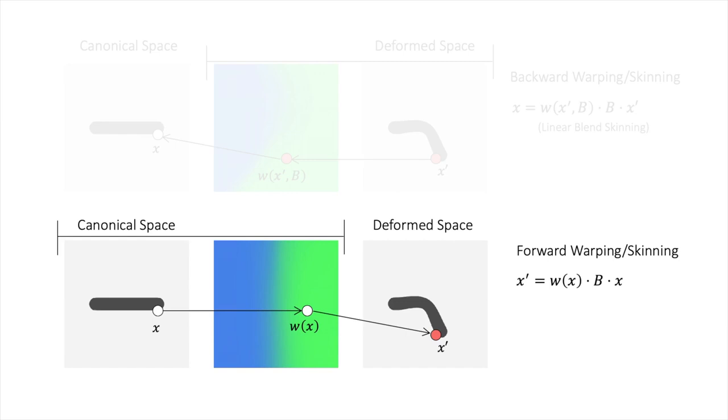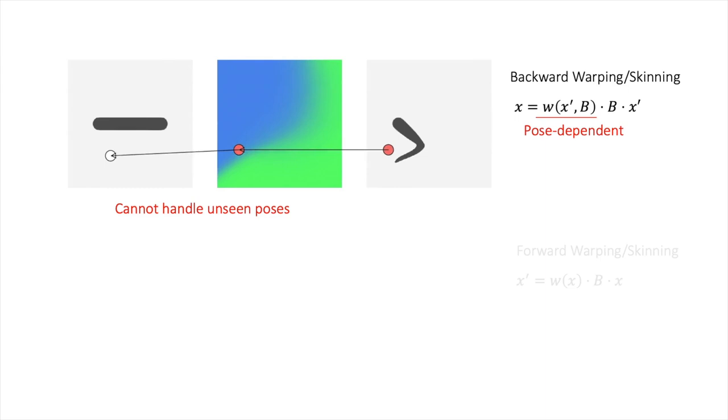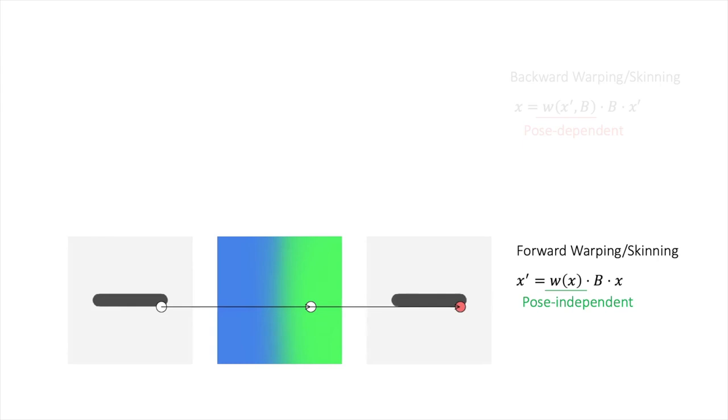As illustrated here, backward skinning weights are pose dependent and do not generalize well to novel poses. In contrast, forward skinning weights do not depend on object pose and thus generalize more easily to unseen poses.